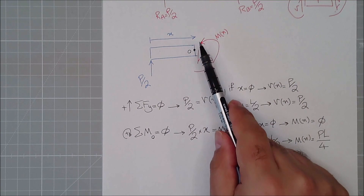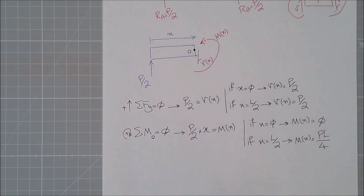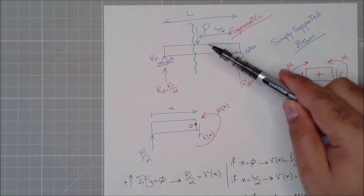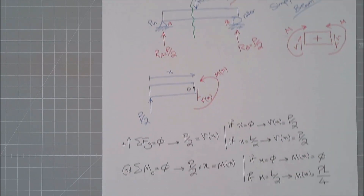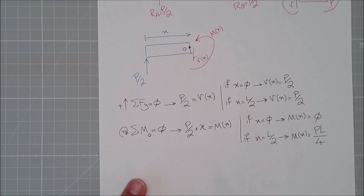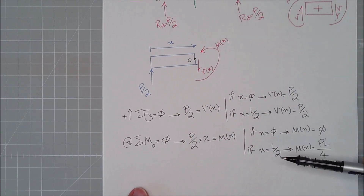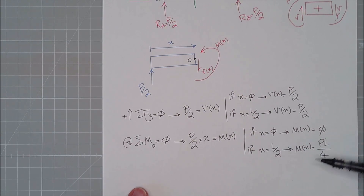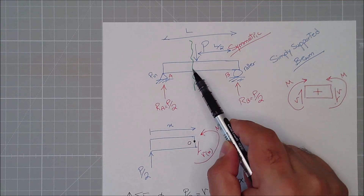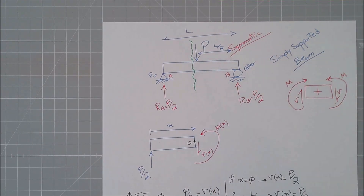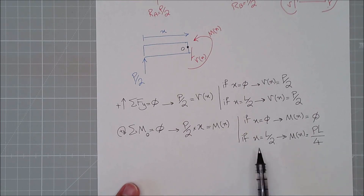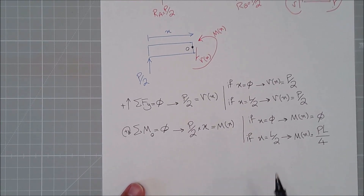You might ask: didn't I say we cut a micron before l/2? Yes — but wherever you cut near l/2, whether slightly before or after, the moment is essentially the same. We can ignore that tiny difference. That's why I substitute x = l/2 to get Pl/4, even though the cut is technically just before that point.